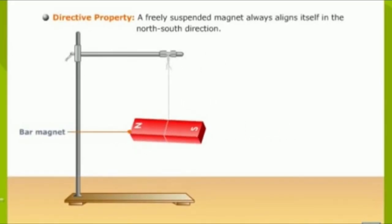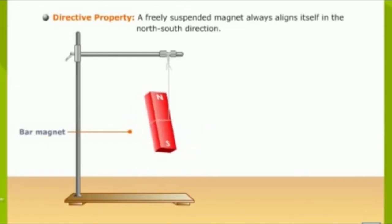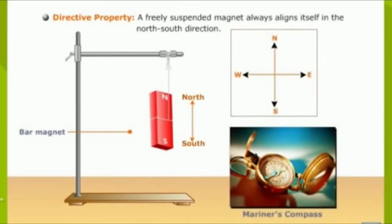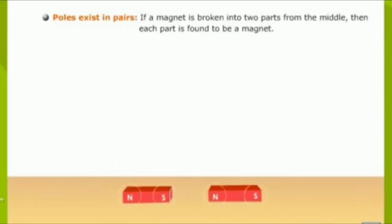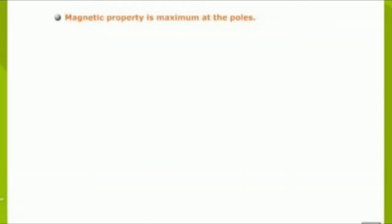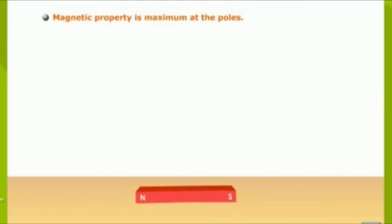The second property is the directive property: a freely suspended magnet always aligns itself in the north-south direction. When a magnet is left resting, one end points to the north and the other to the south. The third property is poles existing in pairs — if a magnet is broken into two parts from the middle, each part is found to be a magnet. The fourth property is that magnetic property is maximum at the poles, where the force of attraction is very strong.